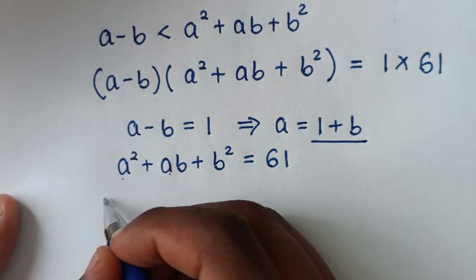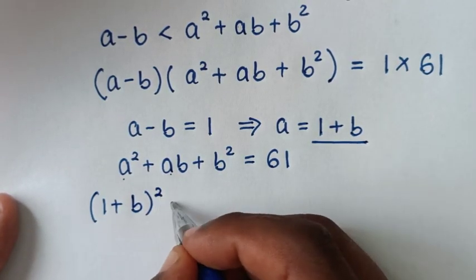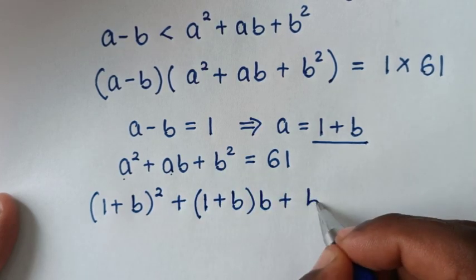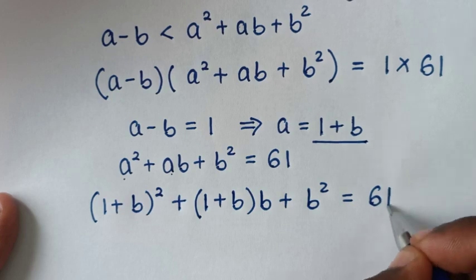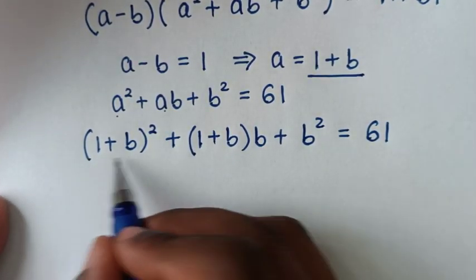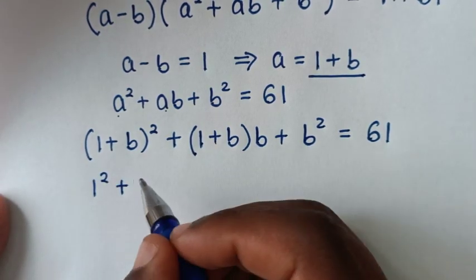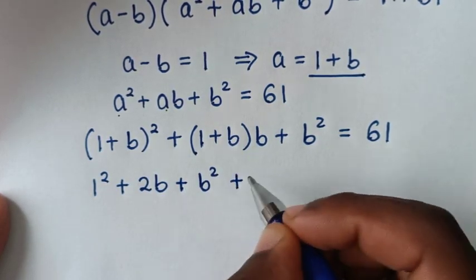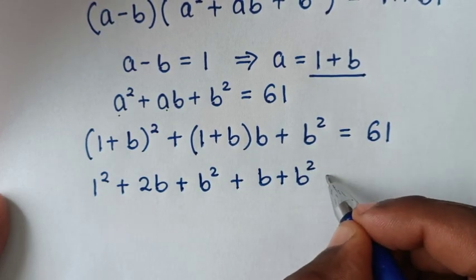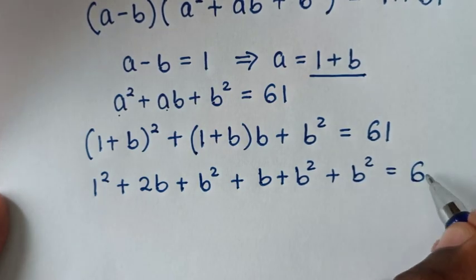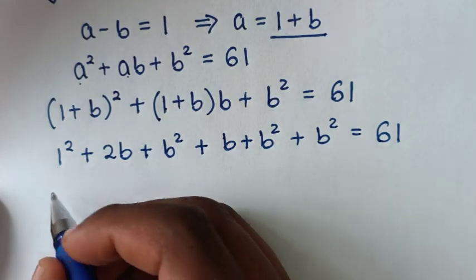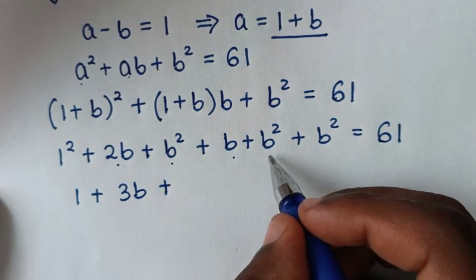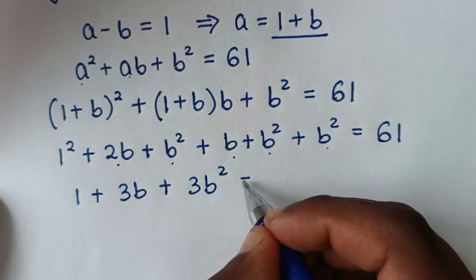So, from here, a² becomes (1 + b)², then plus ab becomes (1 + b) times b, then plus b², is equal to 61. In the next step, we expand (1 + b)²: it is 1² + 2b + b², then plus b times 1 which is b, plus b times b which is b², then plus b², is equal to 61.